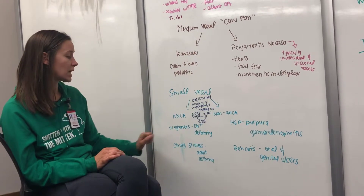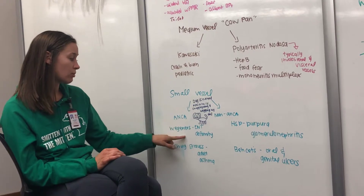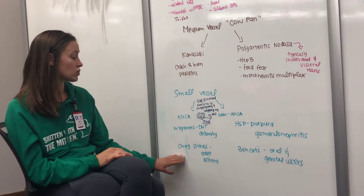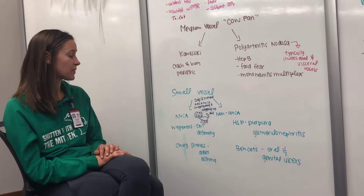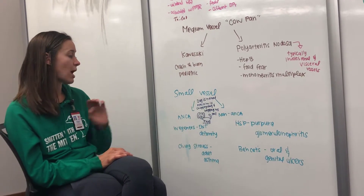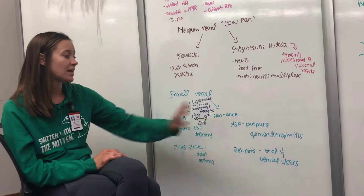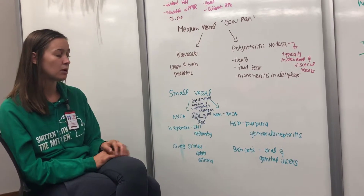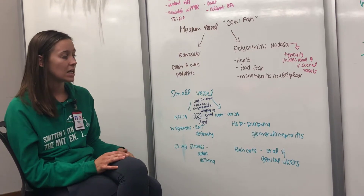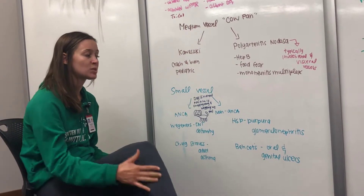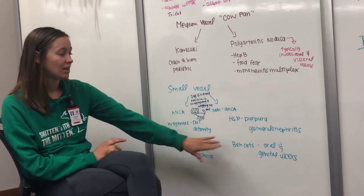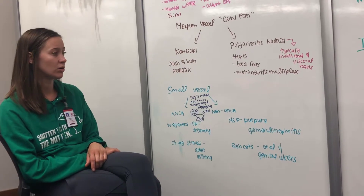The two ANCA-positive conditions are Wegener's and Churg-Strauss. With Wegener's, just remember ENT deformities — you're going to have a deformed nose. Churg-Strauss is associated with adult asthma. We remember these with the mnemonic of the dog named ANCA. For non-ANCA: HSP, Henoch-Schönlein purpura, presents with palpable purpura specifically on the lower extremities and glomerulonephritis. Behçet's is associated with oral and genital ulcers.